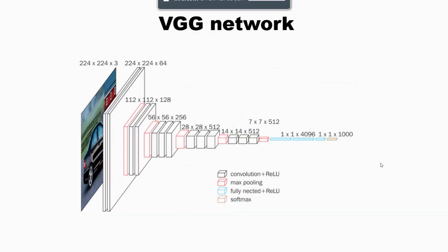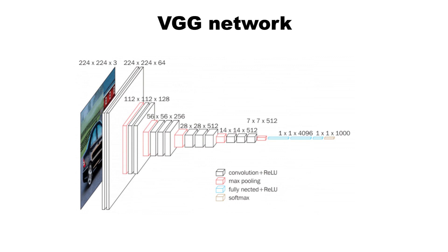So what we're going to do is we're going to take a pre-trained network, and the one we're going to take is the VGG19 network. Check out my VGG implementation from scratch if you want to learn more about the network in depth. We're going to take this network and we're going to freeze everything so that the network weights will not change.